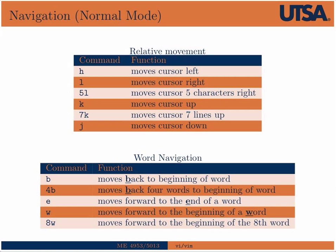K moves up, so 7K would move seven lines up. J moves down — 10J would move ten lines down. We can also navigate using words. B moves to the beginning of the word; 4B moves backwards four words. E moves to the end of the word. W moves to the first letter of the next word, and 8W would move forward to the beginning of the eighth word.